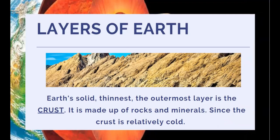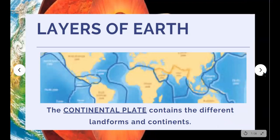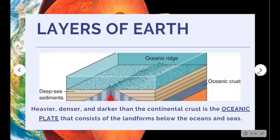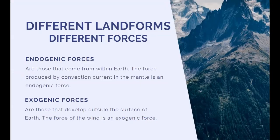The crust consists of plates that are either continental or oceanic. The continental plate contains the different landforms and continents. Heavier, denser, and darker than the continental crust is the oceanic plate, which consists of landforms below the oceans and seas. The oceanic crust is thinner than the continental crust. On the crust are different landforms shaped by different forces.